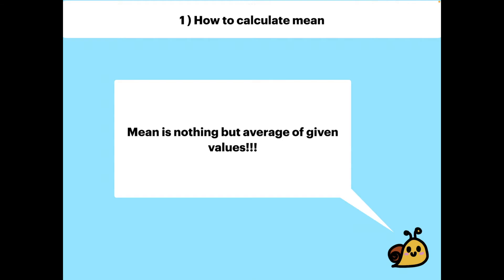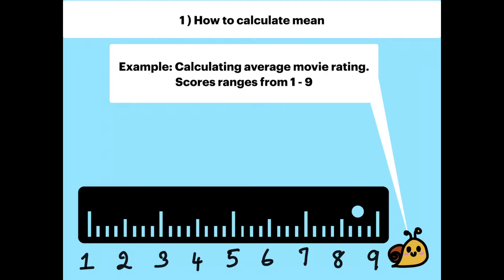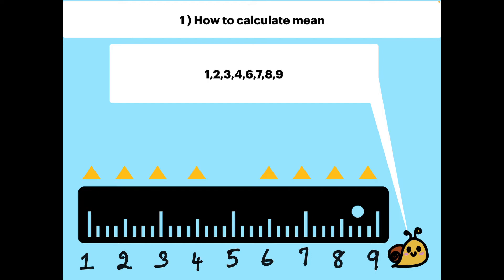Mean is nothing but the average of given values. Let's take this example: calculating the average movie rating. The score ranges from 1 to 9. Let's plot that in our number line. 1, 2, 3, 4, and so on, 6, 7, 8, 9.